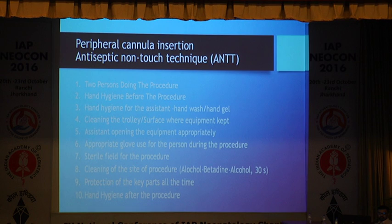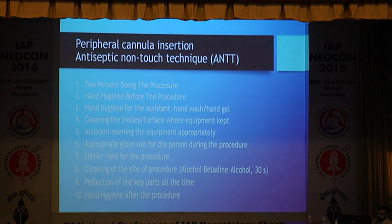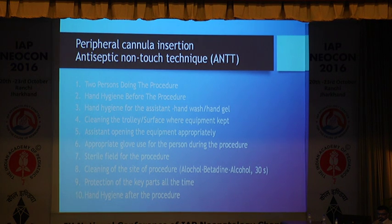Another very important port of entry of infection in babies is not only central lines but peripheral lines. Peripheral lines are much more commonly used — even in level 2 units — and they also become a hub of infection. Similarly, one can use these 10 steps known as the ANPB technique: at least 2 persons should do the procedure, hand hygiene before the procedure, hand hygiene for the assistant, cleaning the trolley surface where equipment will be kept, the assistant opens equipment without contaminating the main person, prepared use of gloves, sterile technique before procedure, cleaning of the site for at least 30 seconds, protection of key parts at all times, and hand hygiene after the procedure. If ANPB is followed even for peripheral cannulas, the rate of infection can be decreased.